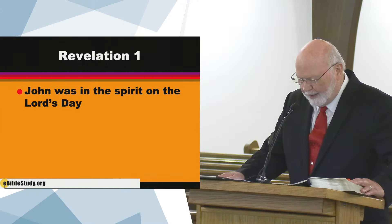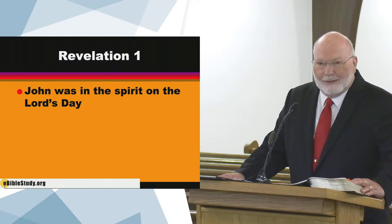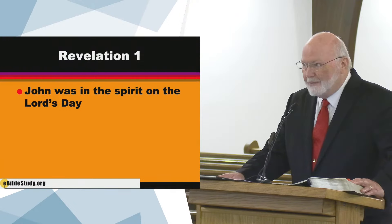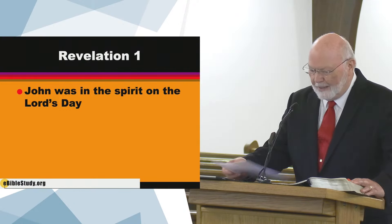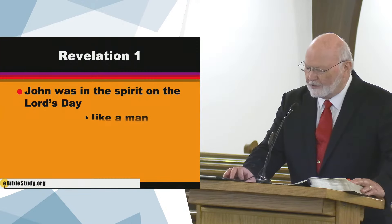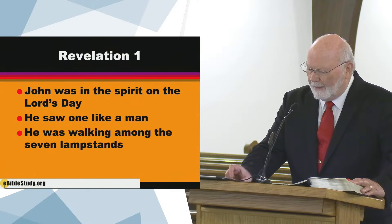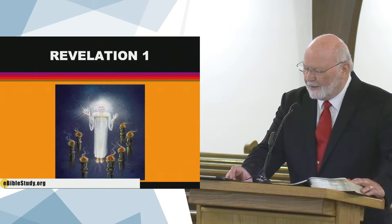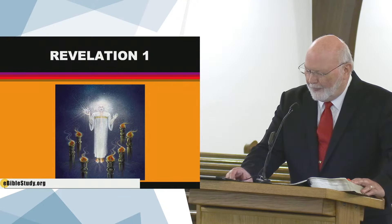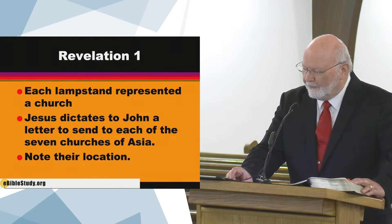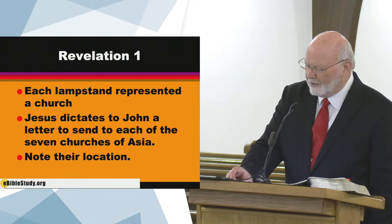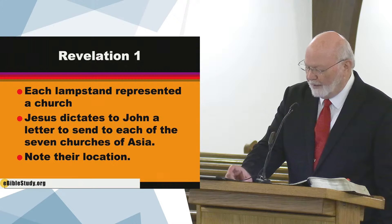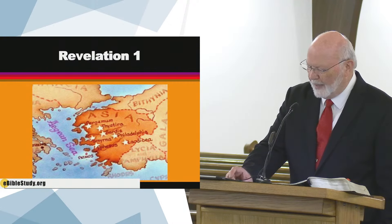This is from the Greek word 'Nike' — there was a goddess named Nike. I'm not using the PowerPoint, but there's an artist's impression, and each lampstand represented a church. Jesus dictates to John a letter to send to each of the seven churches of Asia, and you can see their locations on the map. These are all pretty close together; they're not all scattered around.